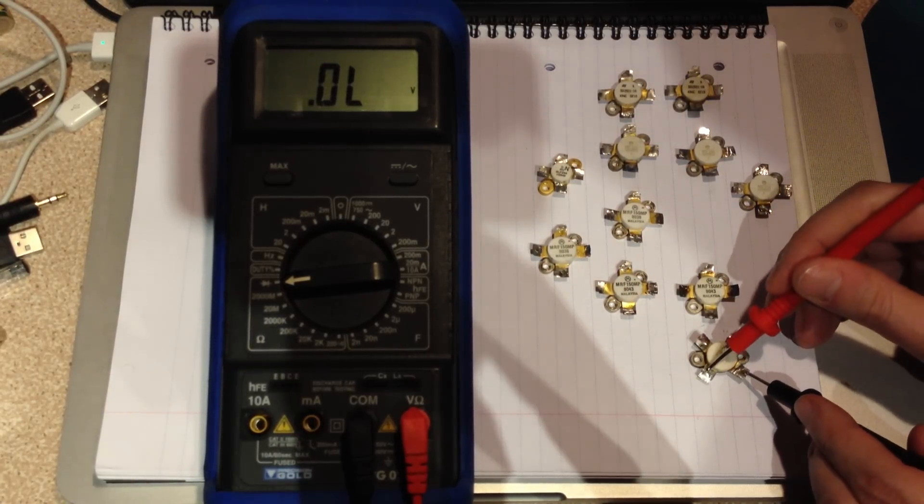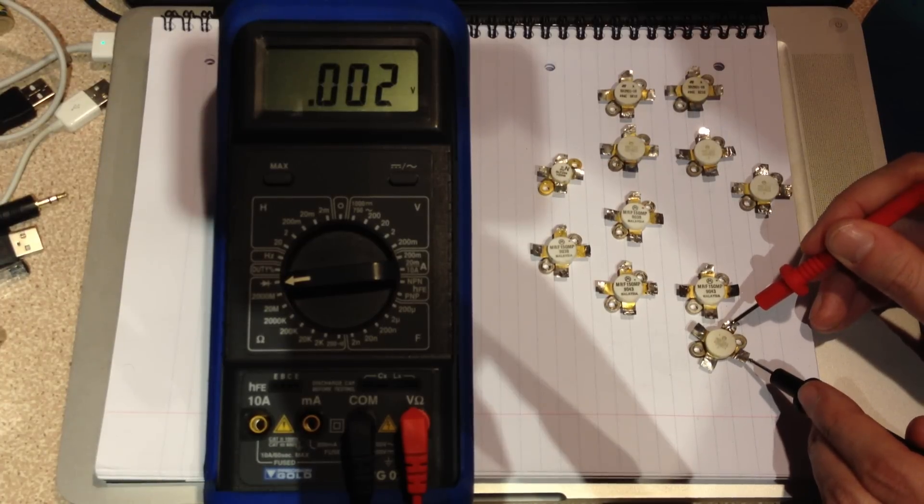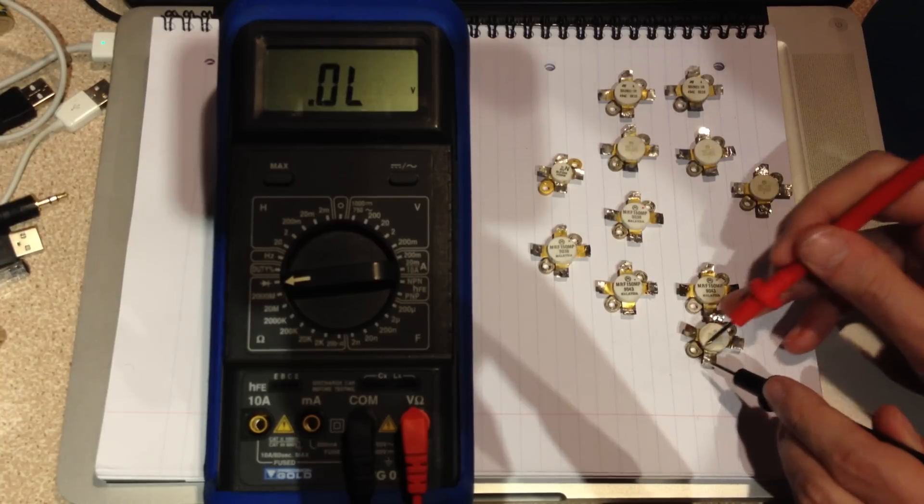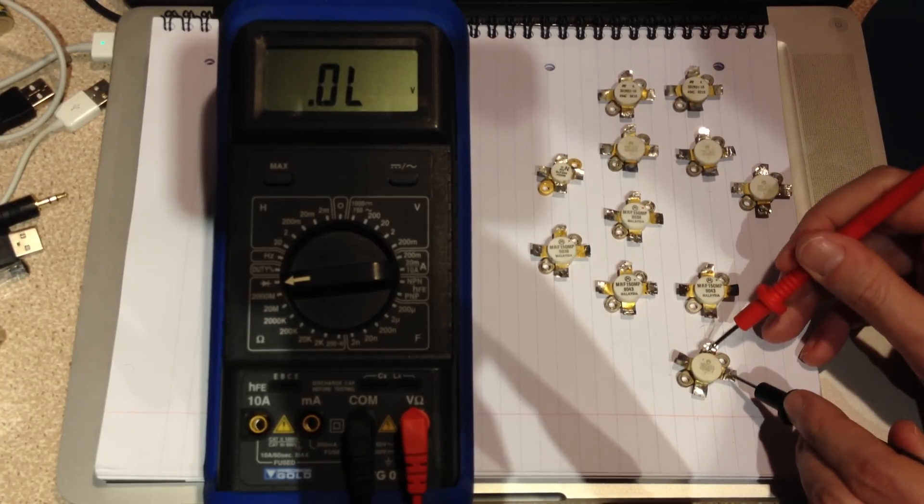MOSFET's off, touch it on the gate, come back. MOSFET's on. Switch it off like that. And the MOSFET's off.